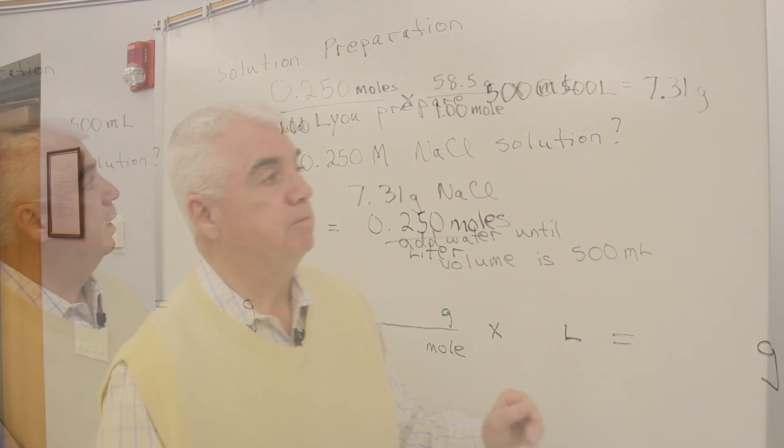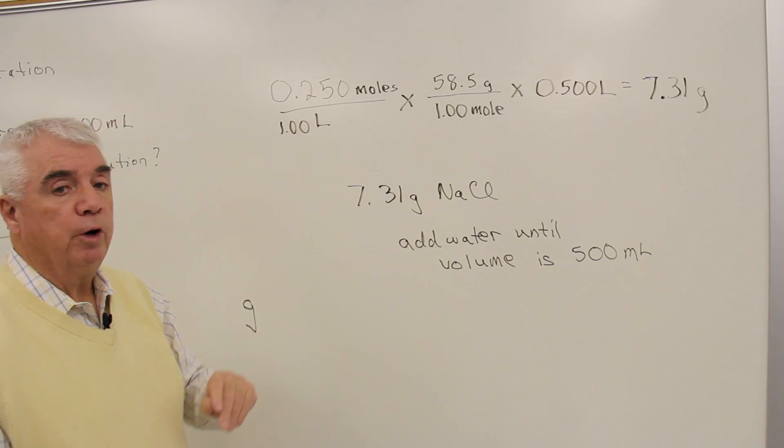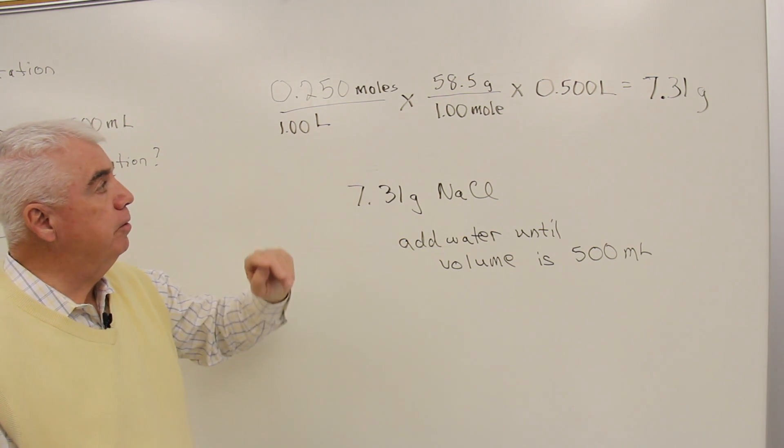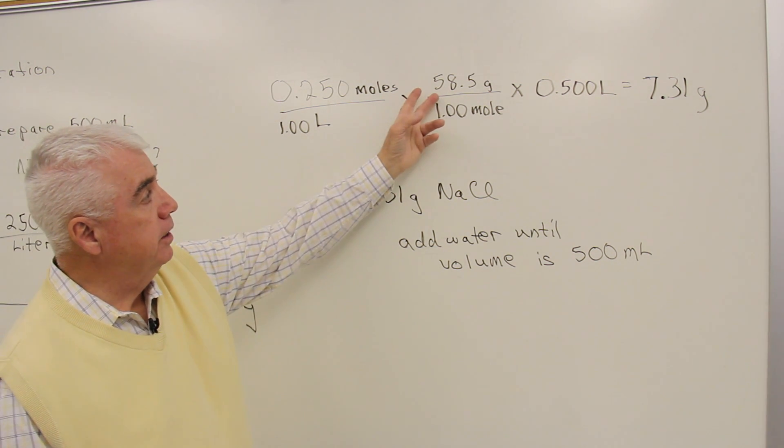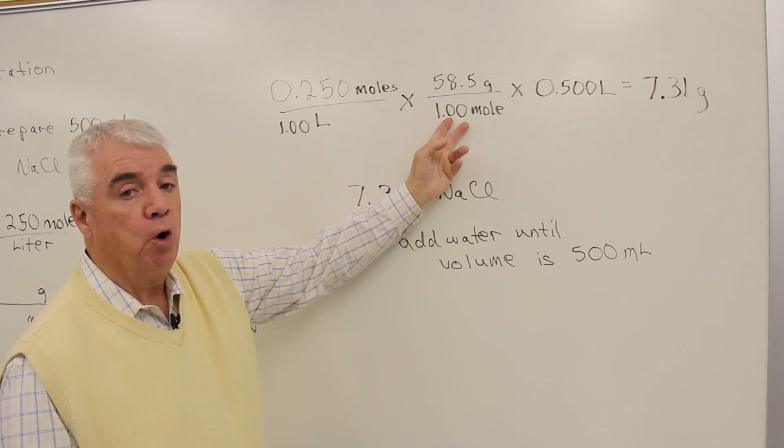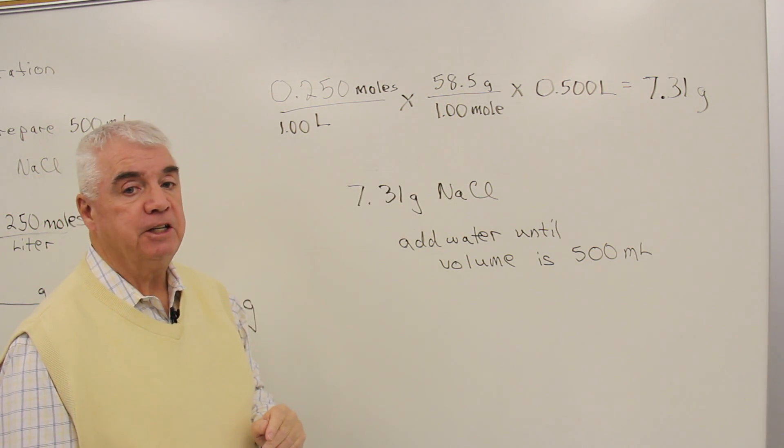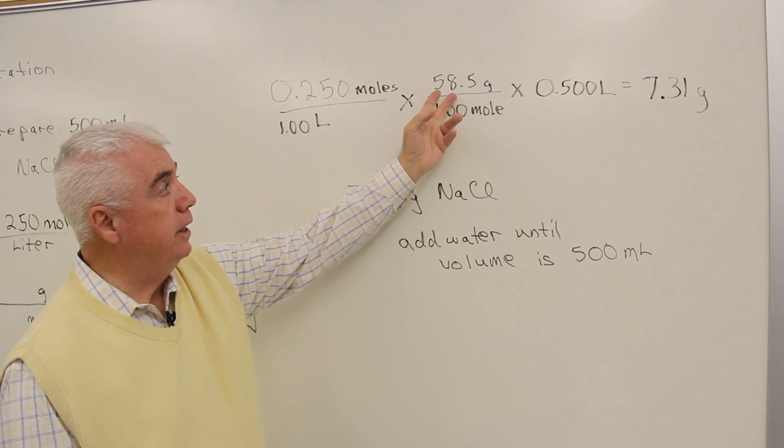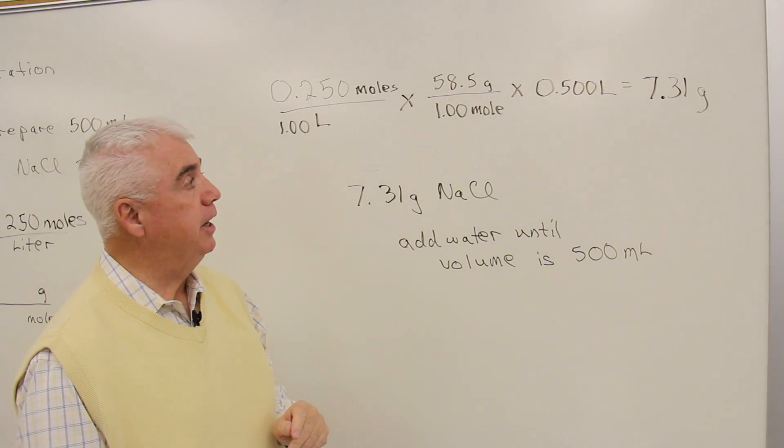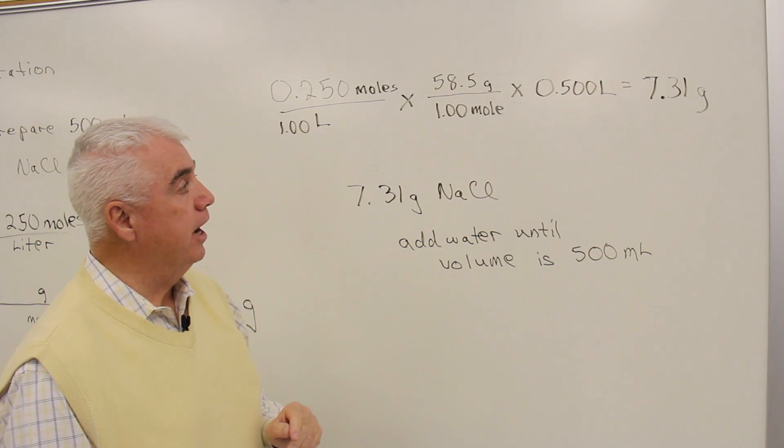Let's look at the numbers. Here's what we're given, 0.250 moles per liter. And we need grams per mole. Well, we know in one mole, there's the molecular weight in grams of sodium chloride. Looking it up in the periodic table, it's 58.5.